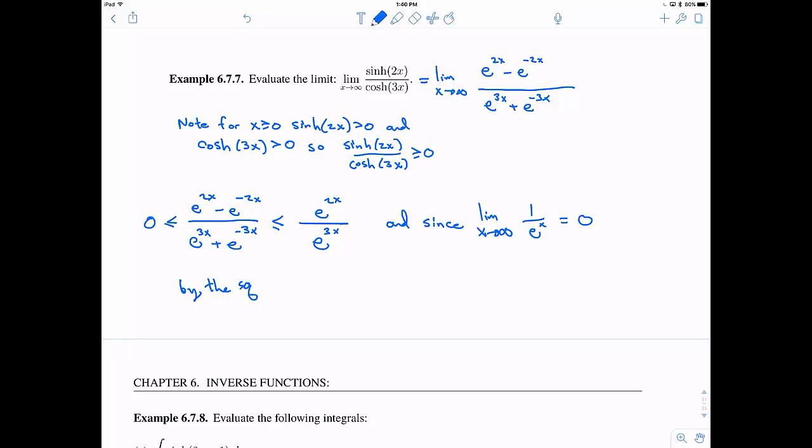And so since this limit is also 0, we know that the limit of the inside guy must indeed be 0. So by the squeeze theorem, we know that that limit of hyperbolic sine of 2x divided by hyperbolic cosine of 3x does indeed equal 0.